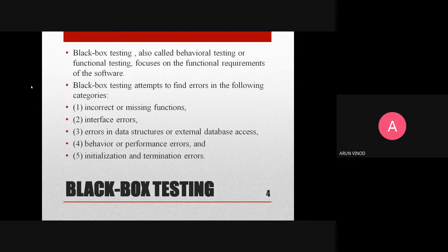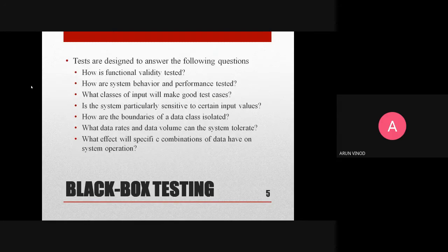The other error categories black box testing attempts to find are: interface errors, errors in data structures and external database access, behavior or performance errors, and initialization and termination errors. So there are five categories of errors that black box testing focuses on identifying.